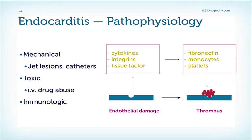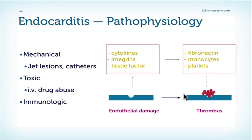Endothelial injury can also be caused by immunologic factors. Whatever the cause, the body tries to repair the defect, activating substances such as cytokines, integrins, tissue factor, fibronectin, monocytes, and platelets — leading to thrombus formation which seals off or tries to repair the defect. So at the beginning of the cascade we have an injury and a thrombus formation.